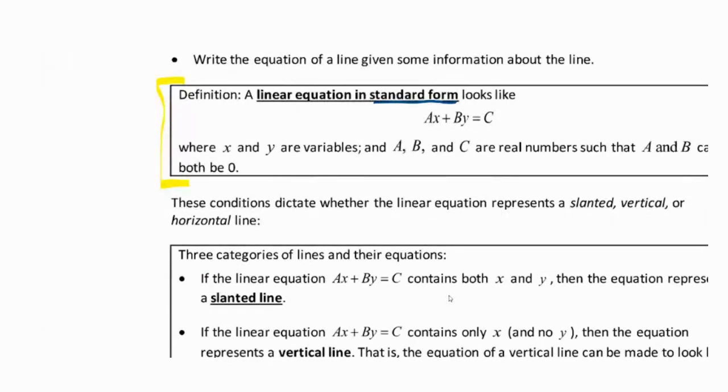It's ax plus by equals c, where a, b, and c are real numbers. Any one of those could be zero, but it's never the case that both a and b are going to be zero, because in order to be a linear equation, it has to at least have a variable in it.